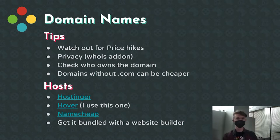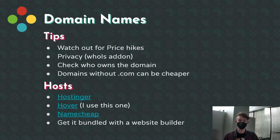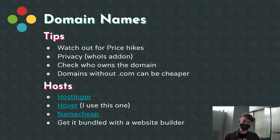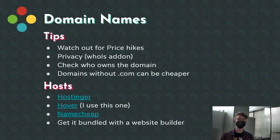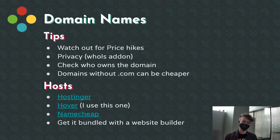You can get custom domain names — for example, nicholsmcclain.com — but that's not really required. Depending on how you're hosting, the URL you have probably works fine. If you use GitHub Pages and your username is similar to your name, the URL would be something like nicholsmcclain.github.io, and that's fine. If you want a custom domain, they're about $10 or $15 a year. Make sure you actually own the domain and that the provider isn't going to steal it when you leave or hike up the price after the first year. You can also get domains with extensions like .me, which tend to be cheaper.